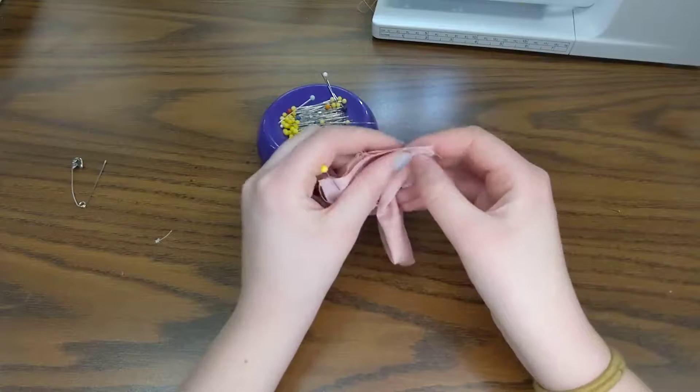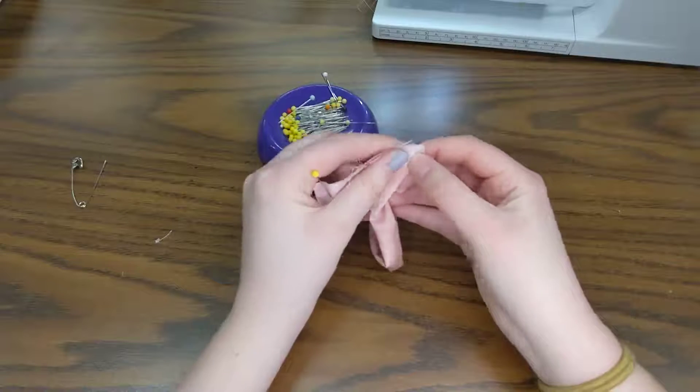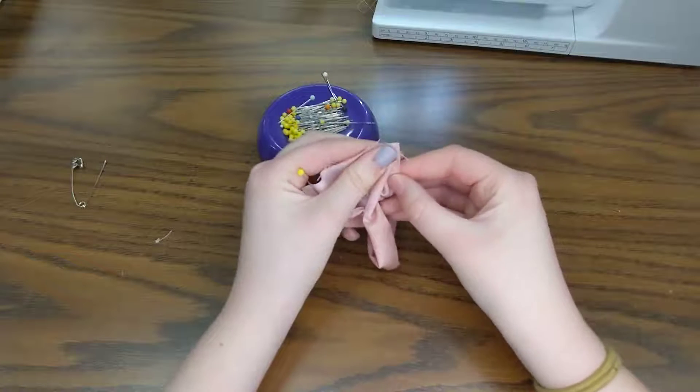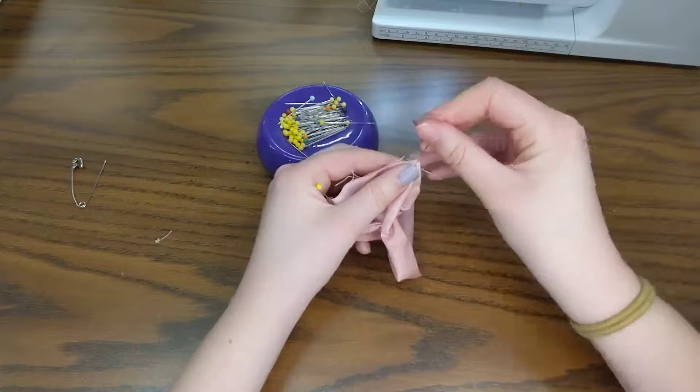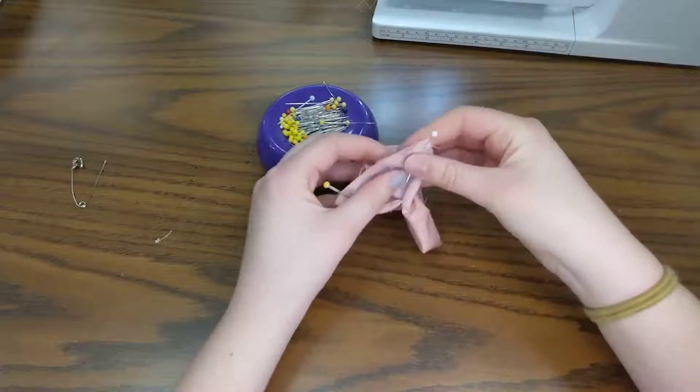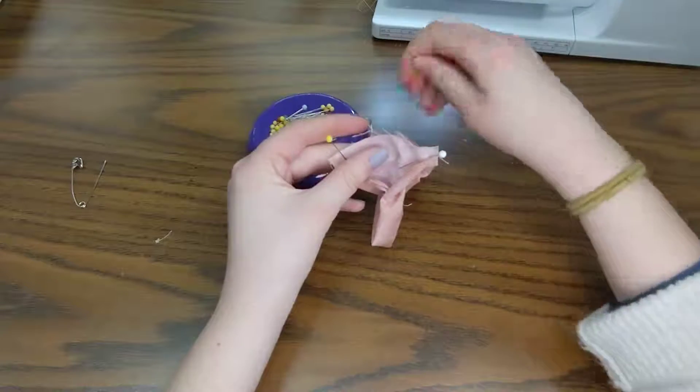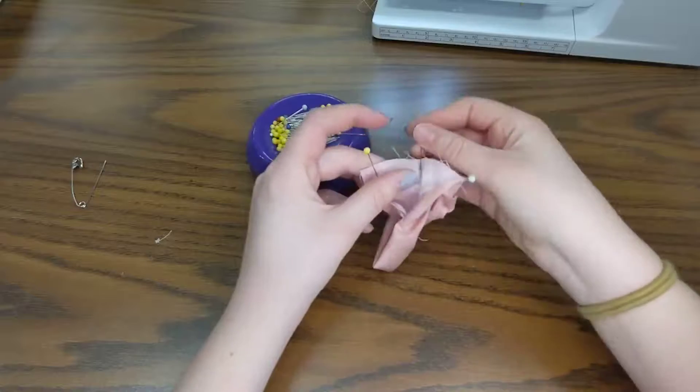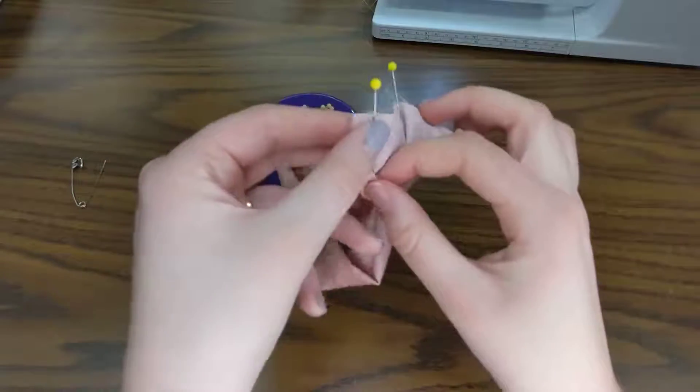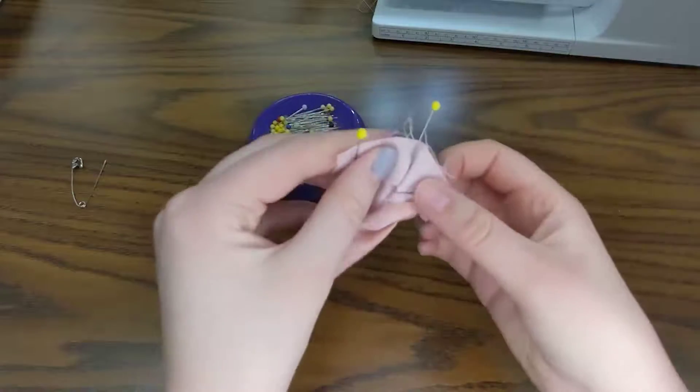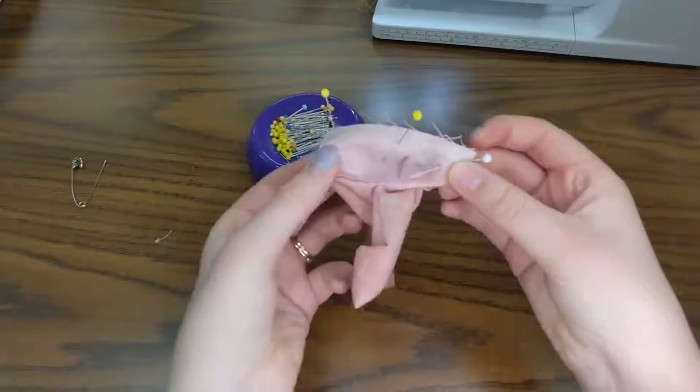It can be kind of tricky because it will want to roll up. Both ends kind of want to roll in opposite directions, so sometimes I like to pin both sides first and then get it laying a little bit more flat. This is right sides together - this is my wrong side, this is my right side - and I have those pinned just like that.